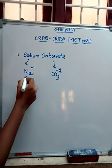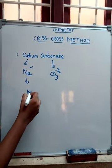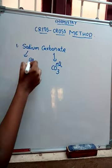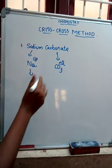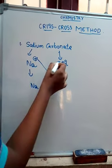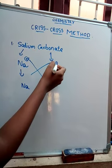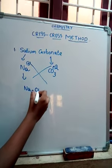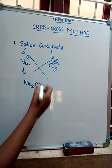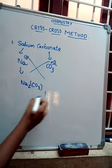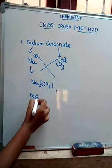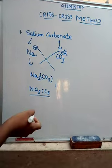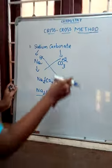Now, the criss-cross method will be applied. Write Na as it is here and ignore the charges. No need for charges in criss-cross method. 1 will go that side and 2 will come this side. Now, CO3 gets 1. If you write 1, nothing will happen. So, Na2CO3. This is the formula for sodium carbonate. Now I will show another example.